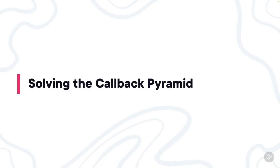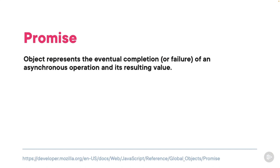As we've seen, nesting callbacks can lead to messy code. How can we get the benefits of nesting without the messiness? The answer is promises. According to Mozilla, a promise is an object that represents the eventual completion or failure of an asynchronous operation and its resulting value. Right off the bat, we see it's an object that helps with asynchronous operations — that's great news, because all those XHR calls we were using are all asynchronous operations.